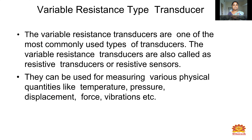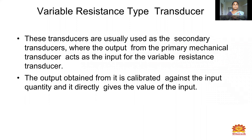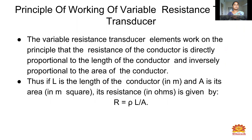What is meant by transducer? It converts one form of energy into another form of energy. Resistive transducers can be used for measuring various physical quantities such as temperature, pressure, displacement, force, and vibrations. These transducers are usually used as the secondary transducer, where the output from the primary mechanical transducer acts as the input for the variable resistance transducer. The output is calibrated against the input quantity and directly gives the value of the input.